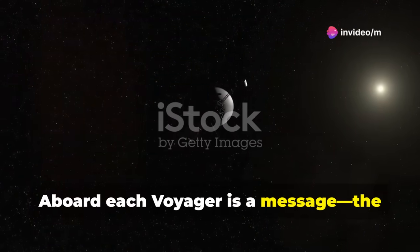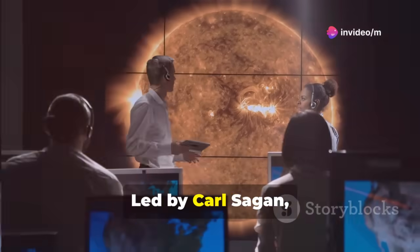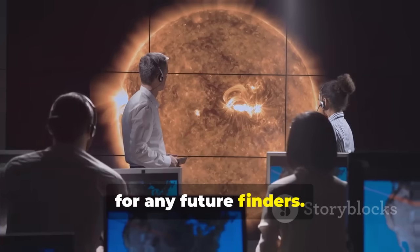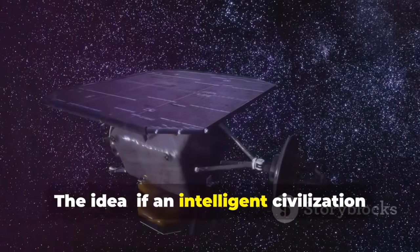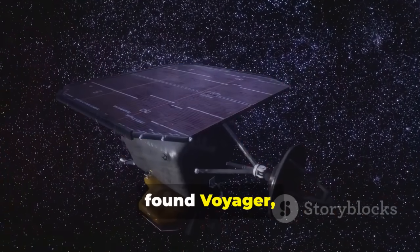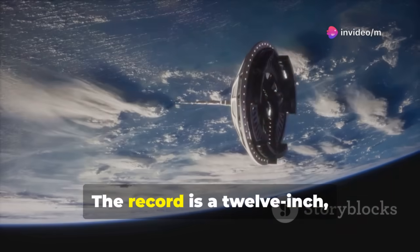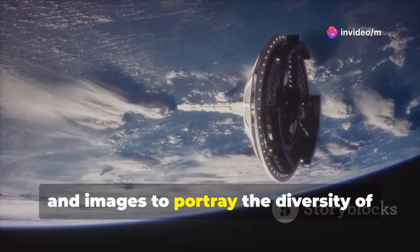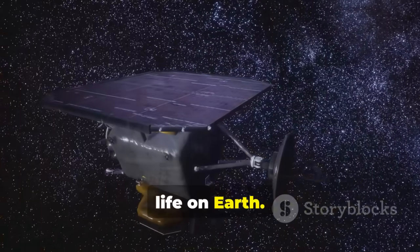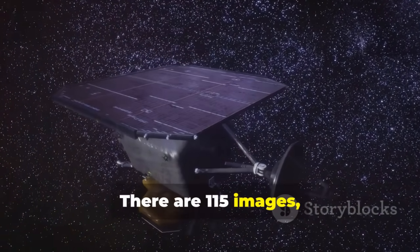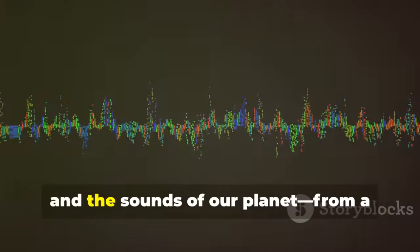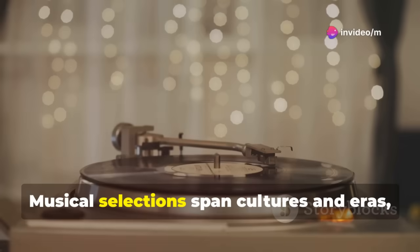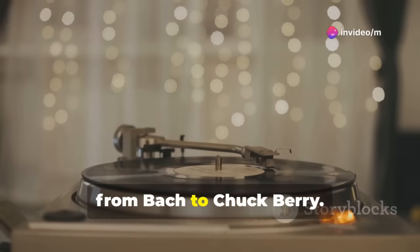Aboard each Voyager is a message, the golden record. Led by Carl Sagan, a committee created a portrait of Earth for any future finders. The idea, if an intelligent civilization found Voyager, this record would be our introduction. The record is a 12-inch gold-plated copper disc containing sounds and images to portray the diversity of life on Earth. There are 115 images, greetings in 55 languages and the sounds of our planet. From a baby's cry to a whale's song, musical selections span cultures and eras from Bach to Chuck Berry.